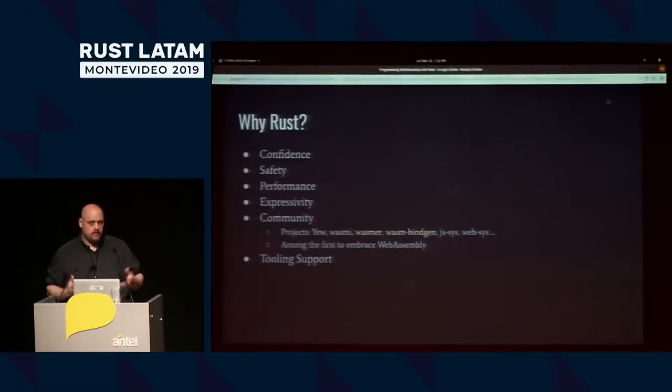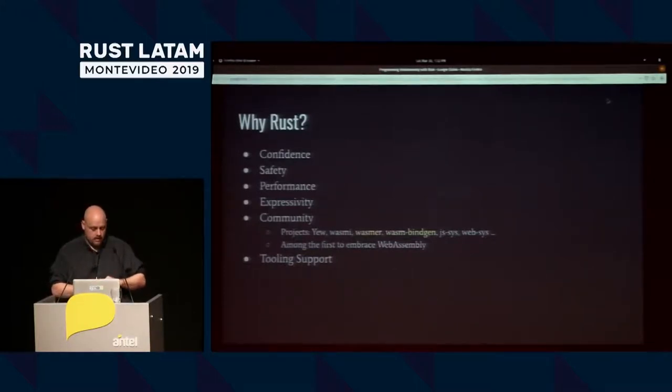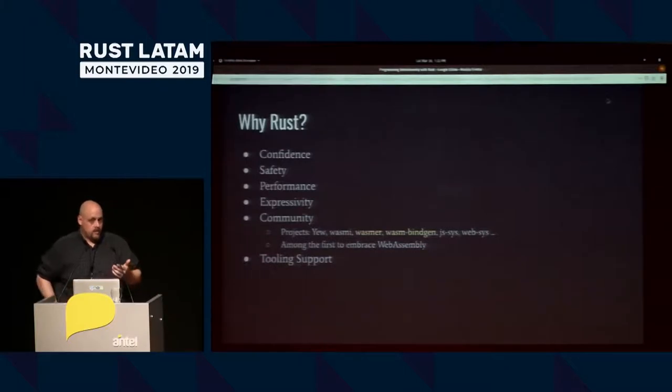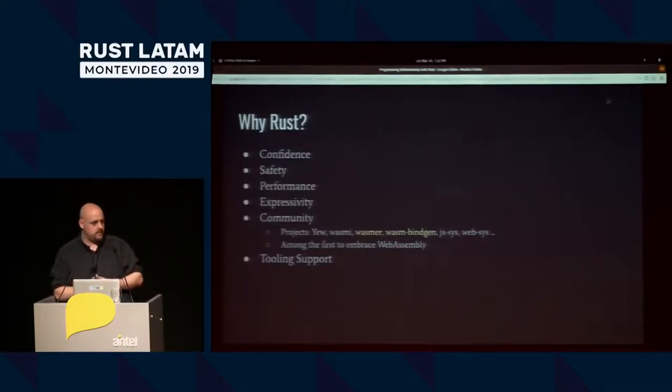Does anybody really need me to go into why we want to use Rust for this? Confidence, safety, performance. One of the things I think people don't give Rust enough credit for is the expressive nature of the language itself. In many cases, when porting code from Go to Rust, I've actually had the code become more readable, not less. People just assume, well, it's a systems language, so obviously it's going to look like line noise — and that is a really old reference.